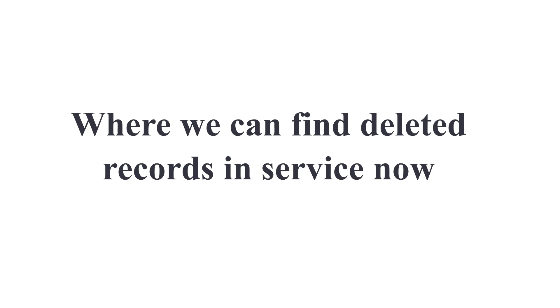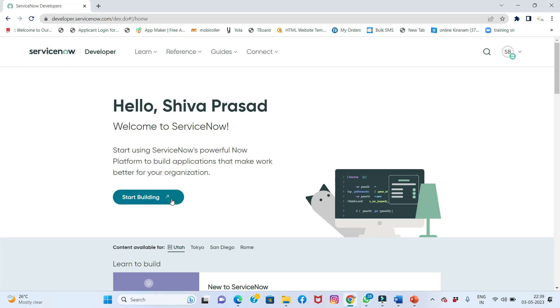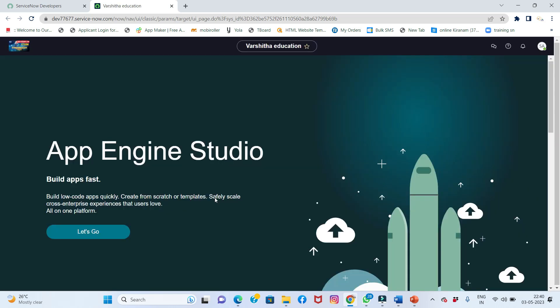I'll show practically how, after deleting, to get it back again. I'll go to my personal developer instance and click on 'Start Building.' When this personal developer instance opens, you can delete any record, table, or field value — everything will be stored in a particular area. I'll show where it will be stored practically.